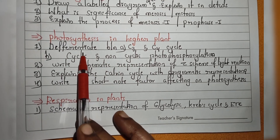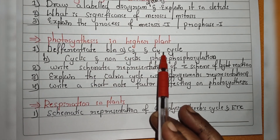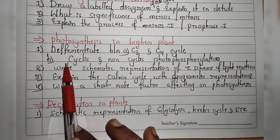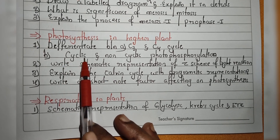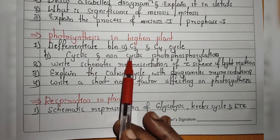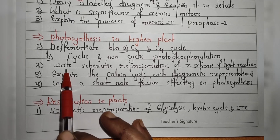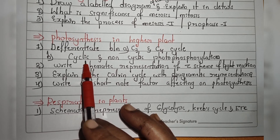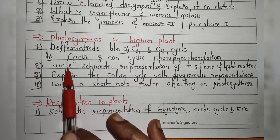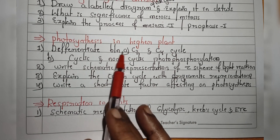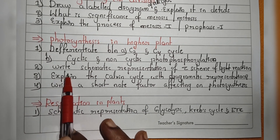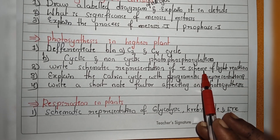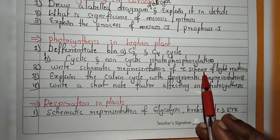Next chapter is Photosynthesis in Higher Plants. They will ask to differentiate between the C3 and C4 cycle. Next, they will ask to differentiate between cyclic and non-cyclic photophosphorylation — I have merged these two topics as they will ask any one. Second topic is: write the schematic representation of the Z-scheme of light reaction, which means you have to focus on non-cyclic photophosphorylation.